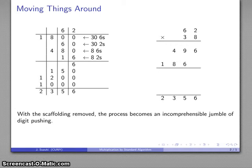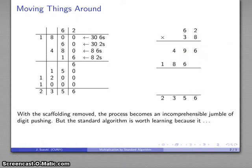And if I remove all the scaffolding, the process becomes an incomprehensible jumble of digit pushing. I got this 496 by doing something. I got this 186 by multiplying 3 times 62. But I had to write it over here because I can't write it down here because the 3 is over here. And, well, why would you want to do that?